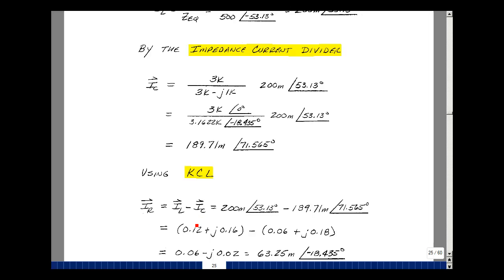So this was a 200 milli at 53.13. It's a minus 189.71 milli, an angle of 71.565 degrees. Since we're going to be subtracting these two, let's put them into rectangular form. So I'll convert this then to a real and imaginary part.